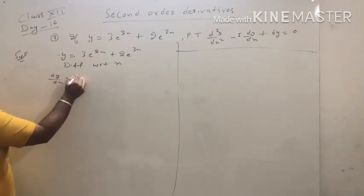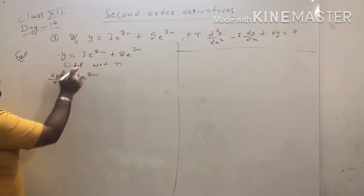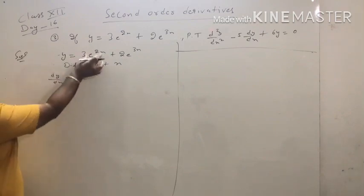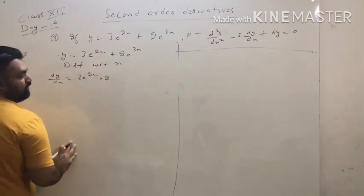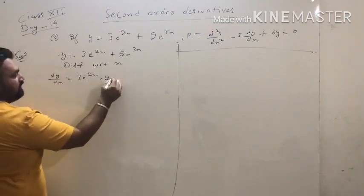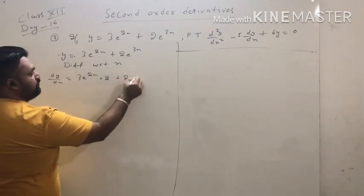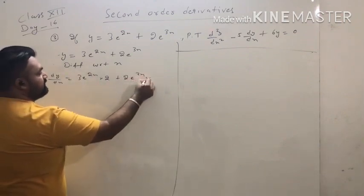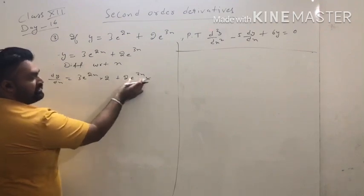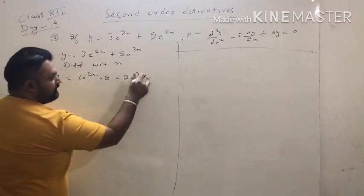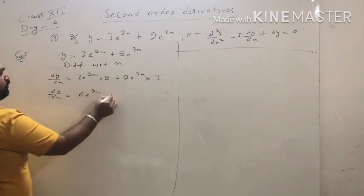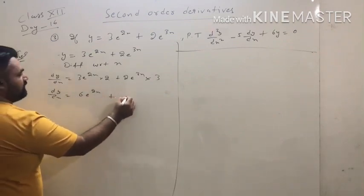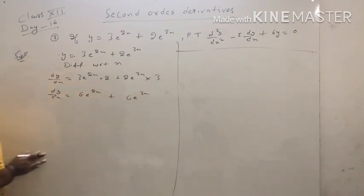dy/dx: 3 is constant, the derivative of the exponential function is the same, multiplied by the derivative of the exponent. So: 3 · e^(2x) · 2 plus 2 · e^(3x) · 3. This gives dy/dx = 6e^(2x) + 6e^(3x).